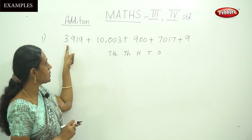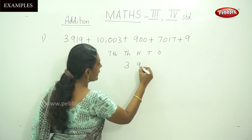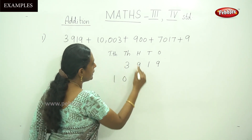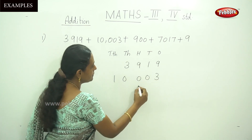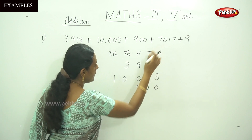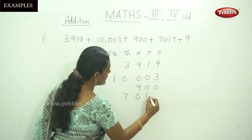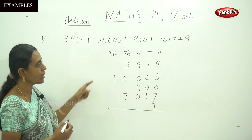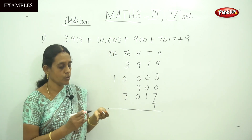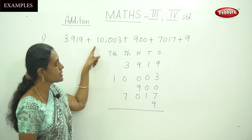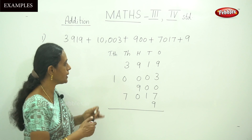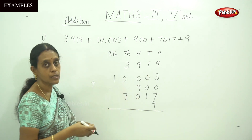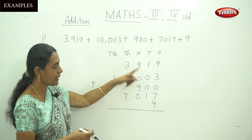Put the numbers in the place value column. The first number is 3,919. The second number is 10,003 — so write 1, 0, 0, 0, 3. The third number is 900. The fourth number is 7,070. The last number is 9. Make sure to align each digit under the correct place value column. This is how you arrange numbers with different digits.